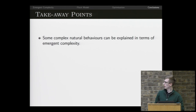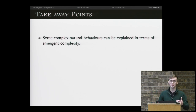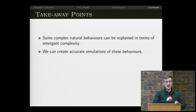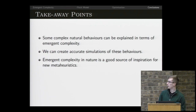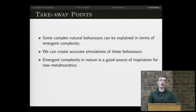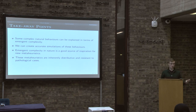To summarize: we can describe complex natural behaviors in terms of emergent complexity, and we can apply our theory to these systems — it's quite a good one in terms of accuracy. We can create accurate simulations of these behaviors using emergent complexity, which can help us understand things from a biological perspective but also solve problems in computer science. These solutions are called meta-heuristics, which are a subclass of swarm intelligence — a random way of determining a heuristic for solving a problem. Our swarm intelligence algorithms are inherently distributive because they have this property in nature, and they're resistant to pathological cases.